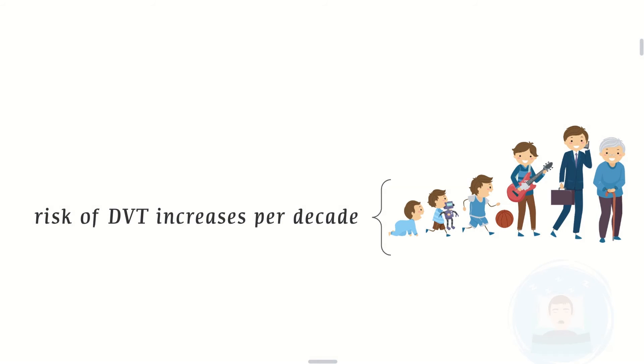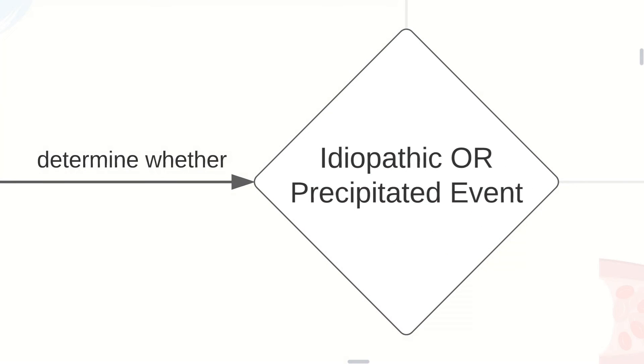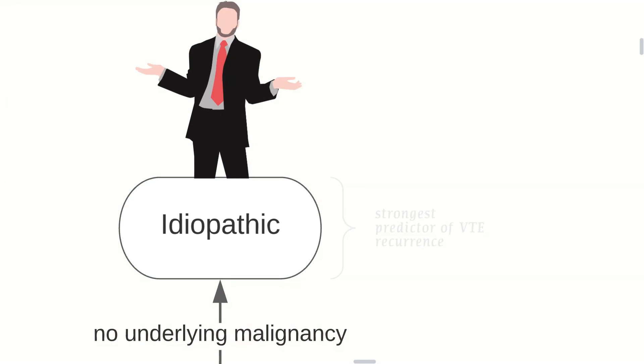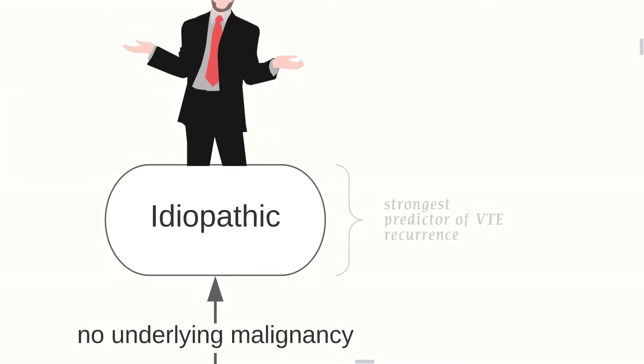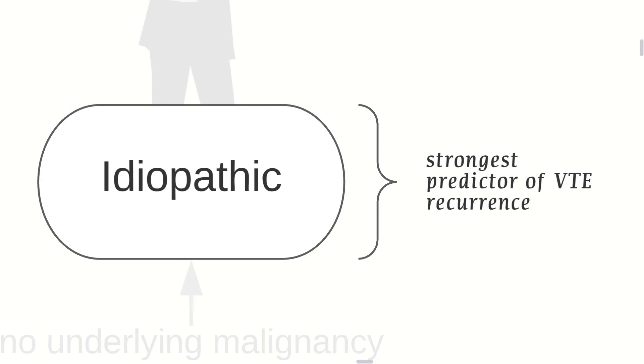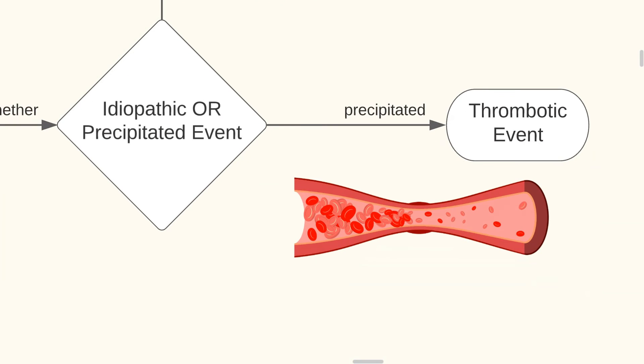genetic predisposition, malignancy, immobility, a prior surgical operation or obesity. Age, however, the risk of DVT increases per decade and it must be noted. The next step is to determine whether the event was idiopathic or precipitated. If there is no underlying malignancy, idiopathic source can be considered which is the strongest predictor for VTE recurrence.